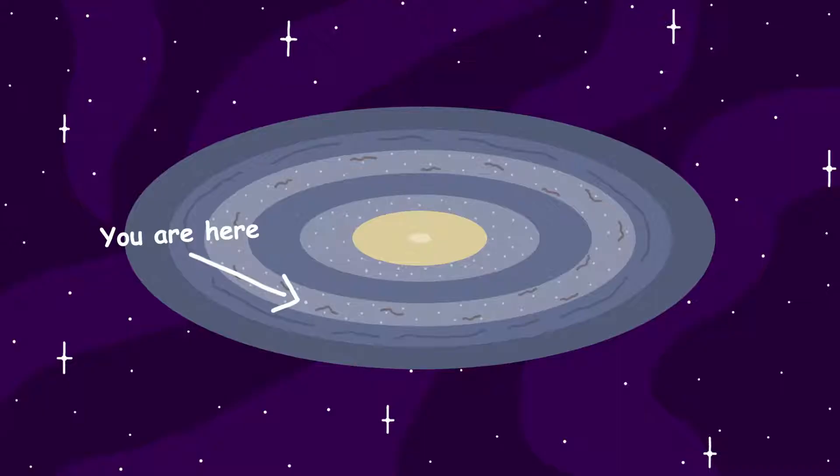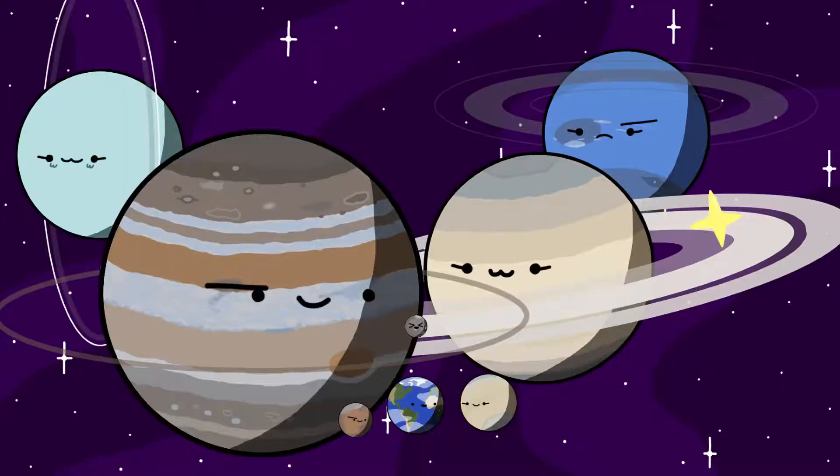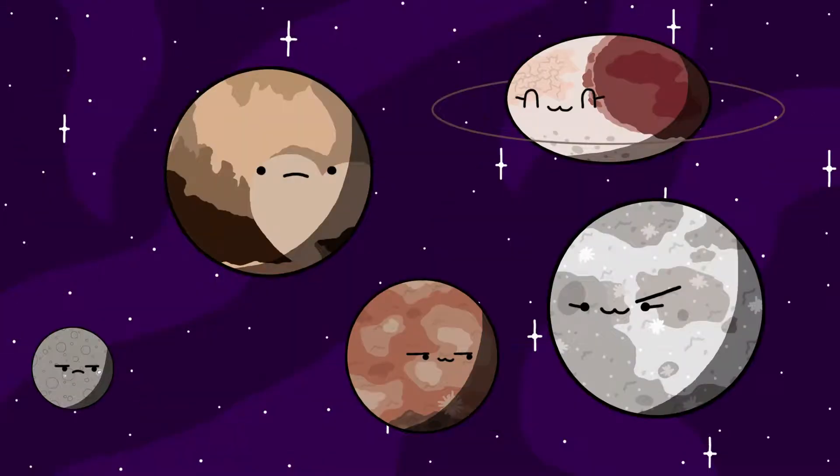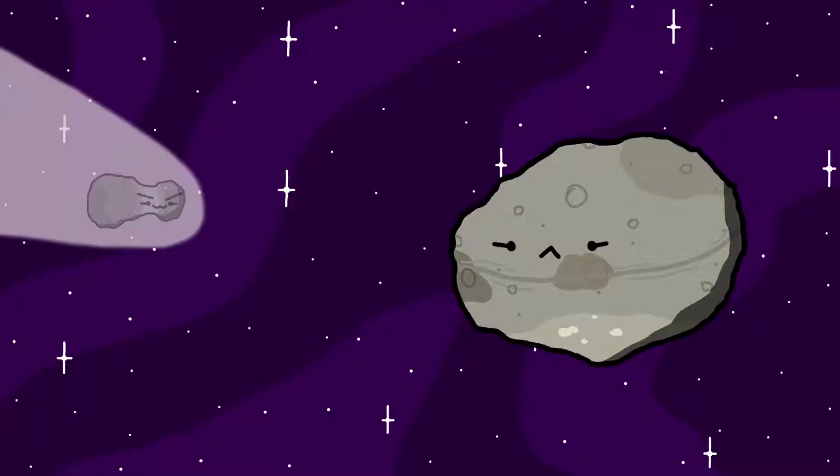Our solar system consists of the sun, the eight planets, a few dwarf planets, dozens of moons, and trillions of asteroids and comets.